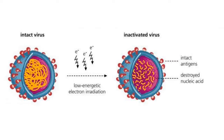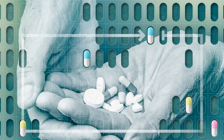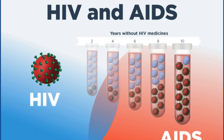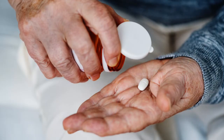Whenever the virus senses the environment is restricted for multiplying T-helper cells, it goes into an inactive state, making it difficult for medicine to identify which is an immune cell and which is a virus-infected cell. Again, when a person stops treatment, which favors the virus's growth environment, the virus becomes active again and starts multiplying very rapidly. This makes treatment compulsory for a lifetime and makes it almost impossible to cure the disease completely.